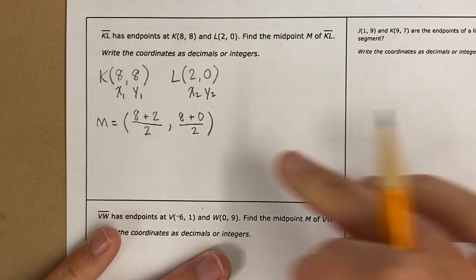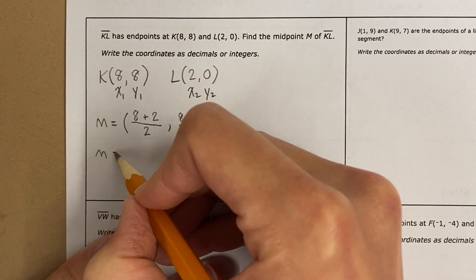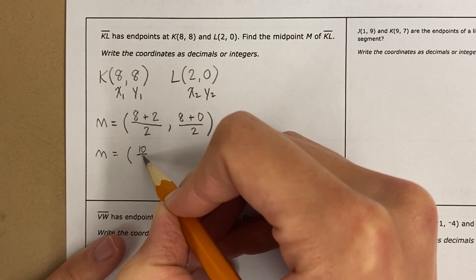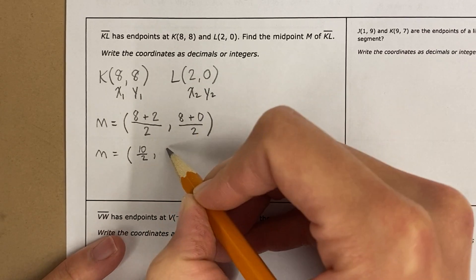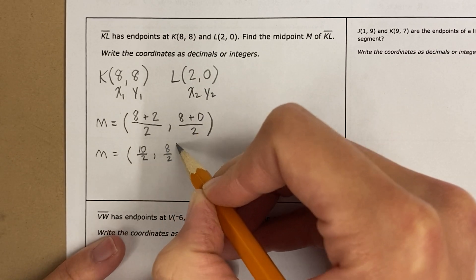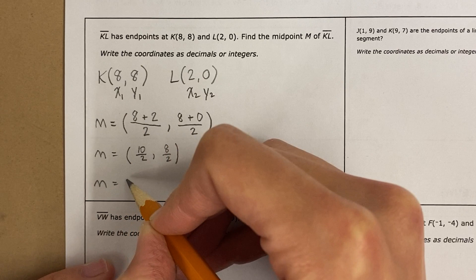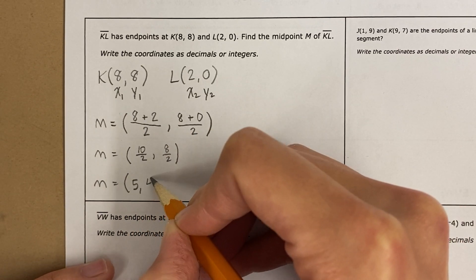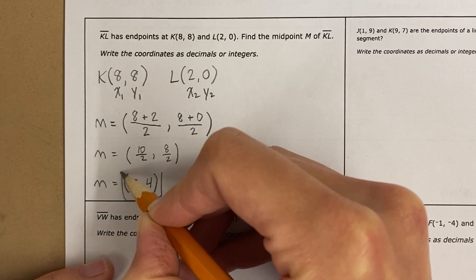Now that I've plugged this in, I'm just going to simplify step by step. 8 plus 2 is 10 divided by 2. 8 plus 0 is 8 divided by 2. This is 10 divided by 2 is 5, and 8 divided by 2 is 4. And this is the midpoint.